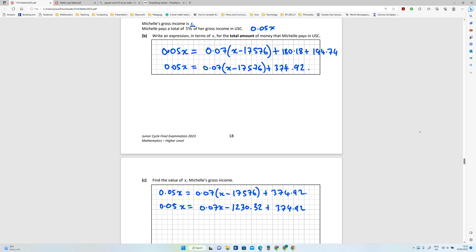So let's bring the X over here. We'll subtract 0.07X from both sides basically, which is going to give me 0.02 over here. That'll be gone, so I'm going to be left with negative 1,230.32 plus 374.92.